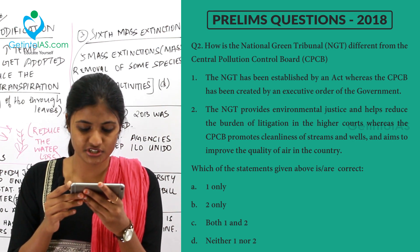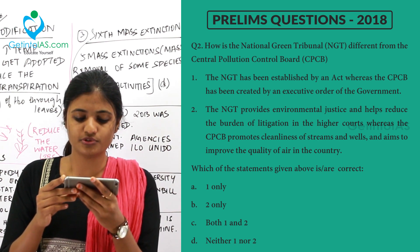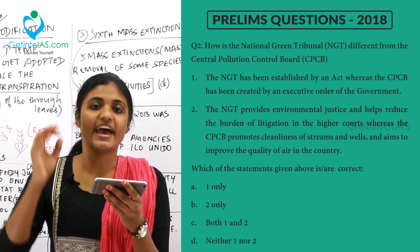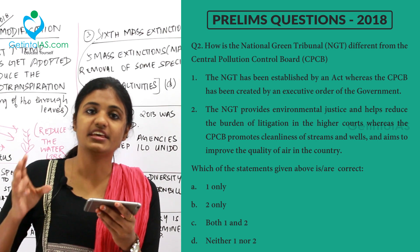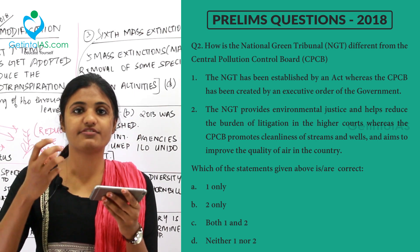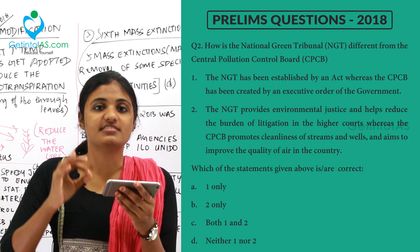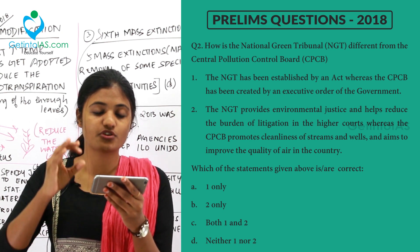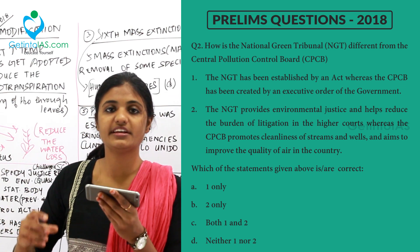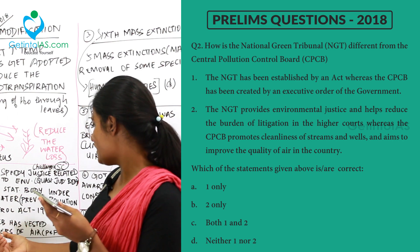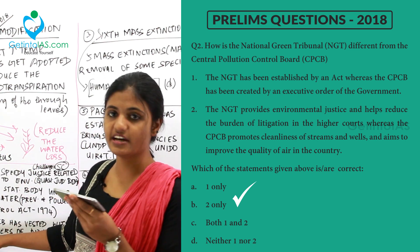The second statement says the NGT provides environmental justice and helps reduce the burden of litigation in the higher courts, whereas the CPCB promotes cleanliness of streams and wells and aims to improve air quality in the country. The NGT does provide speedy justice for environmental problems, though its results can be challenged only in the Supreme Court. CPCB promotes cleanliness of streams and wells under the Water Prevention and Pollution Control Act, and maintains air quality under the Air Prevention and Pollution Control Act of 1981. So option B — statement two only — is the correct answer.